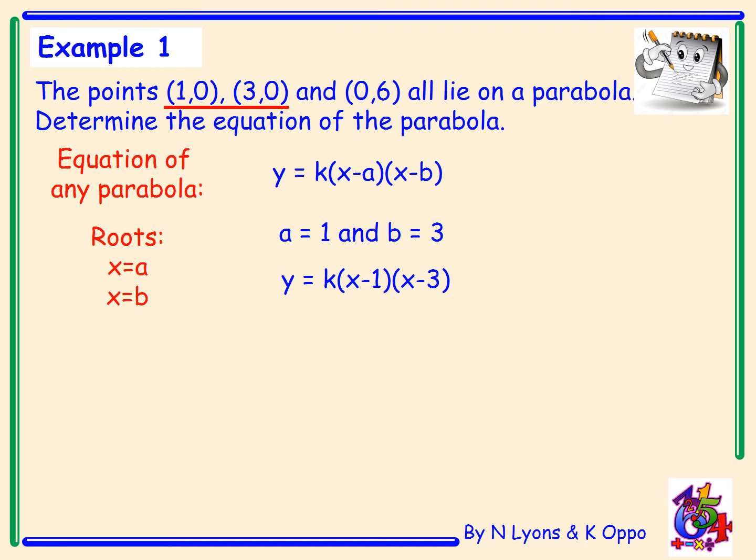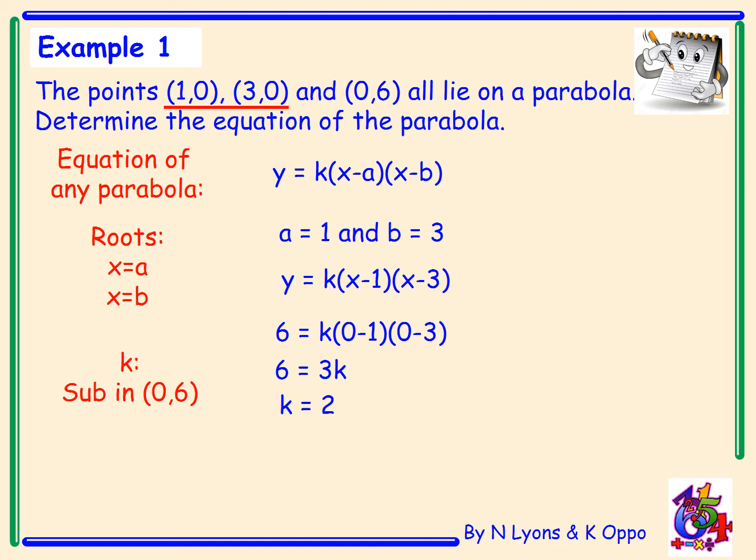Substituting into the general form gives y equals k times x minus 1 times x minus 3. To find the constant k, I use another point on the parabola — the point (0, 6), the y-intercept. The point (0, 6) means x equals 0 and y equals 6. Substituting: 6 equals k times (0 minus 1) times (0 minus 3). That gives 6 equals 3k — be careful, minus 1 times minus 3 is plus 3. Solving, k equals 2.